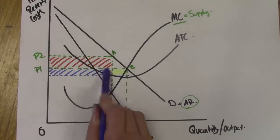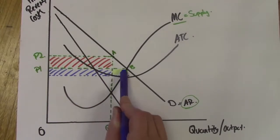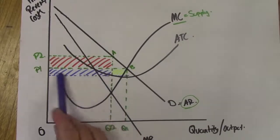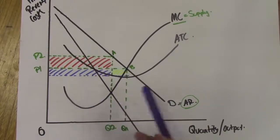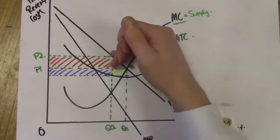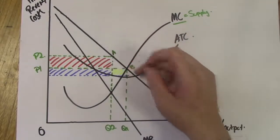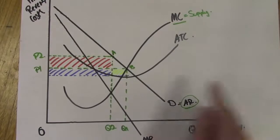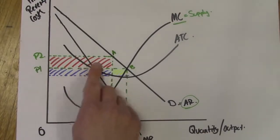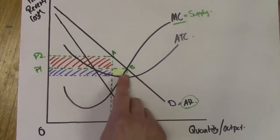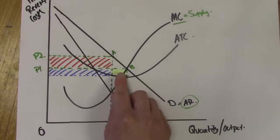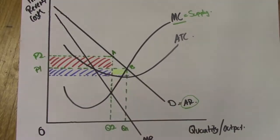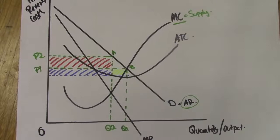As a result of moving to point B and selling at price P1, the firm loses the area in red — those supernormal profits — but they're still making a profit: the blue area. They also gain the yellow area. However, adding blue and yellow together is less than red and blue combined. So by moving towards allocative efficiency, the firm loses supernormal profits but does not make a loss.